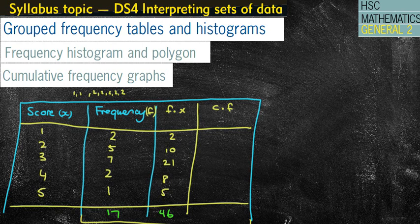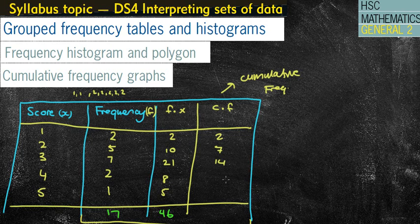Now, can you remember what your cf column is? CF means cumulative frequency, which means that we accumulate the frequency column. So we've got 2 to start off with, then we add the next one — that makes 7, add the next one makes 14, add the next one makes 16, add the next one we get 17. The total of the frequency column will be the same as the last number in the cumulative frequency.